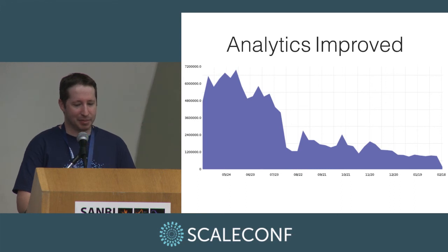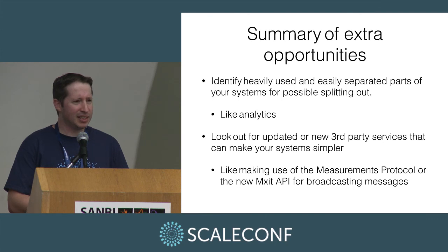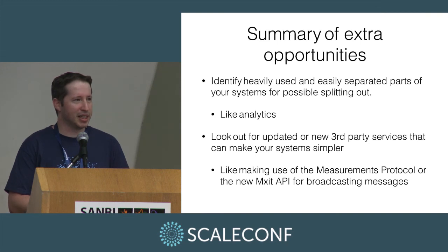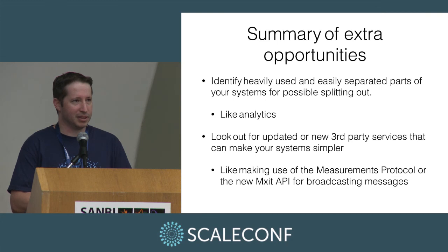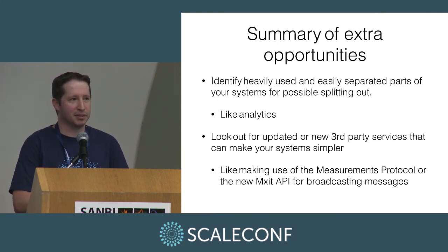In summary for extra opportunities: identify your heavily used and easily separated parts of your system, and try to split them out. Look out for updated or third-party services that can negate some of your need to host things locally. Another example: Mixit has a new API for broadcast messaging, which means all our broadcasts to an application's members no longer need our own queue — we just send one API call to Mixit and it does it for us. That dropped down our requirements quite a lot.